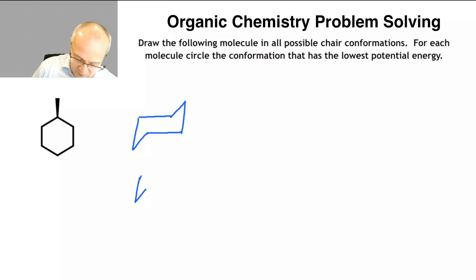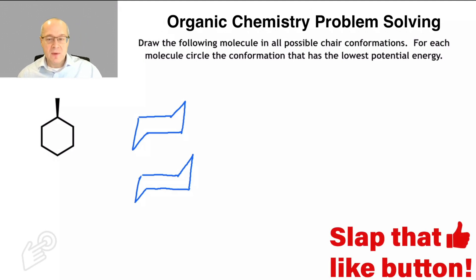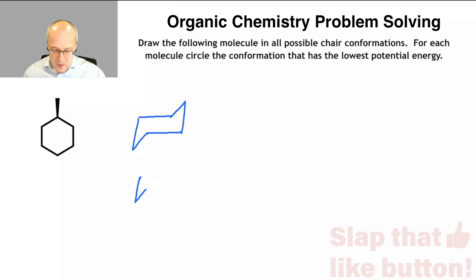Let's do that again. Make a V. The left side of the V is a little longer than the right side. Draw two parallel lines. The bottom one should be slightly longer than the top one. And then connect them with an upside down V. Like that. There you go. There you have it. Two chair cyclohexanes.